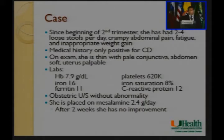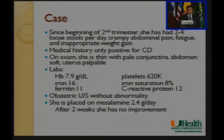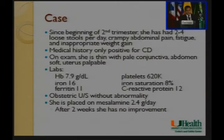Since the beginning of her second trimester — about the past six weeks — she had been having two to four loose stools per day with crampy abdominal pain and fatigue. Her obstetrician noted she was not gaining enough weight. On exam she was thin and somewhat anemic with pale conjunctiva; her abdomen was soft and her uterus was at the appropriate height. Labs showed hemoglobin of around eight, thrombocytosis, low iron and ferritin with low iron saturation consistent with iron deficiency anemia, and an elevated C-reactive protein.